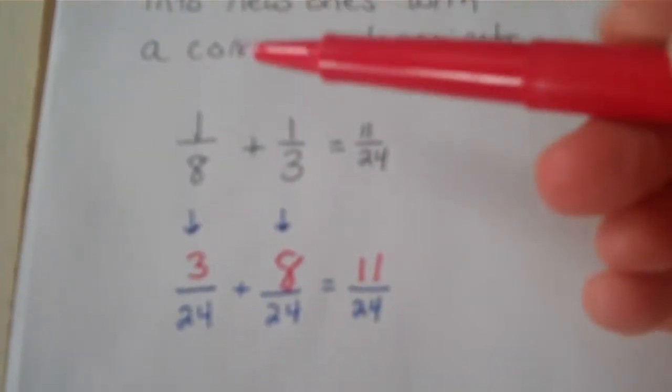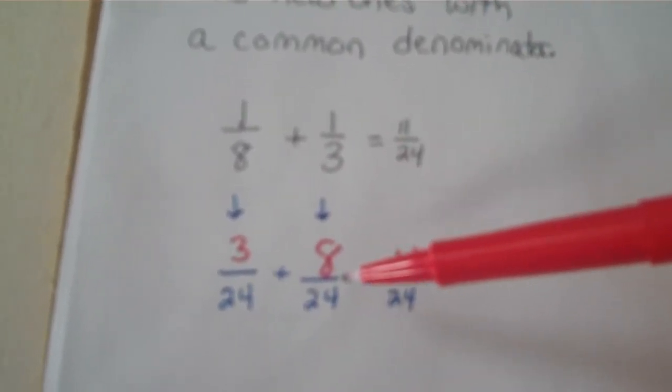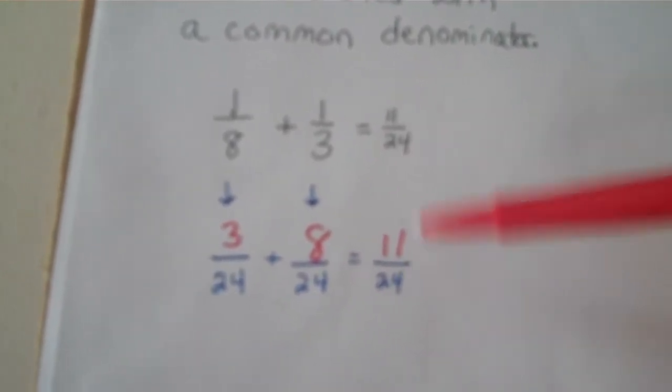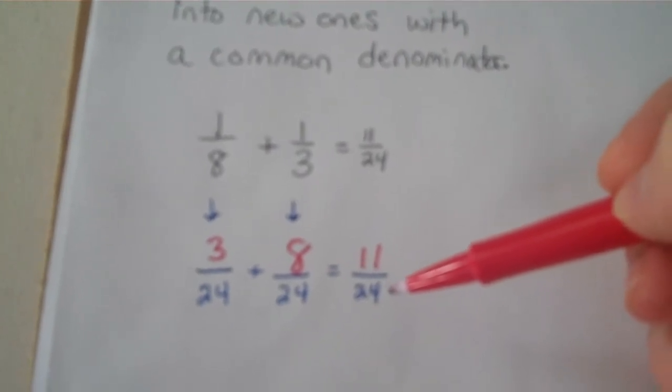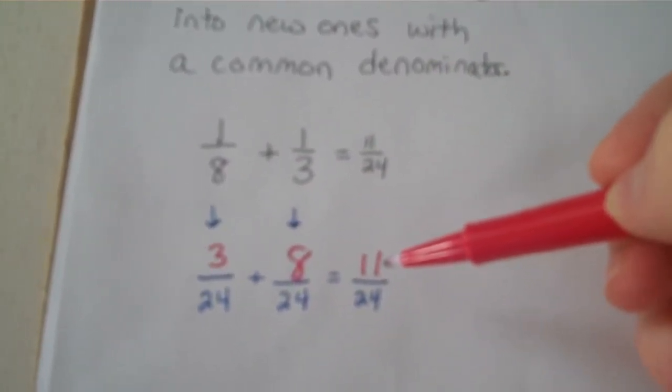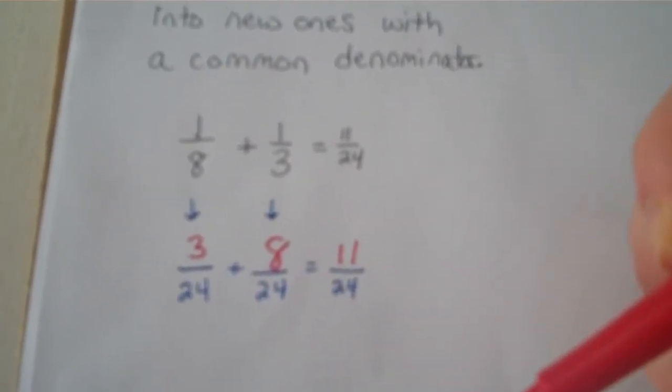One eighth is the same as three twenty-fourths, and one third is equivalent to eight twenty-fourths. Three plus eight is eleven twenty-fourths. Now we know that the twenty-four is a common denominator for eighths and thirds, and the eleven is the result of adding them after we've made them into common denominator fractions.